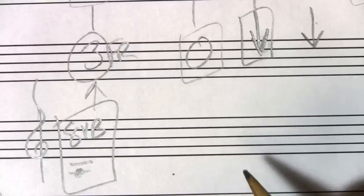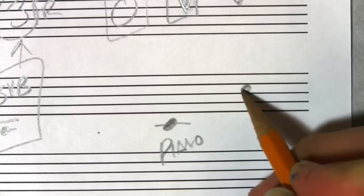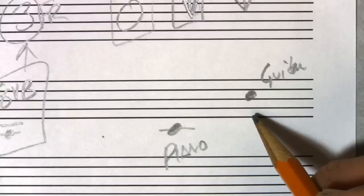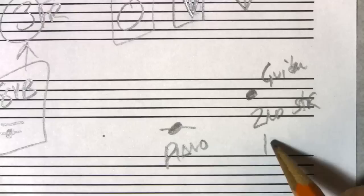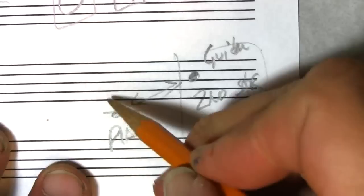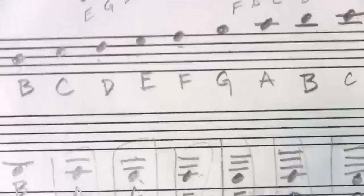The notation on the staff for the guitar is an octave away from the piano. In other words, this C on the piano is not the third fret on the guitar A string — it's the note on the second string, first fret. So the piano and the guitar are written an octave apart notation-wise.